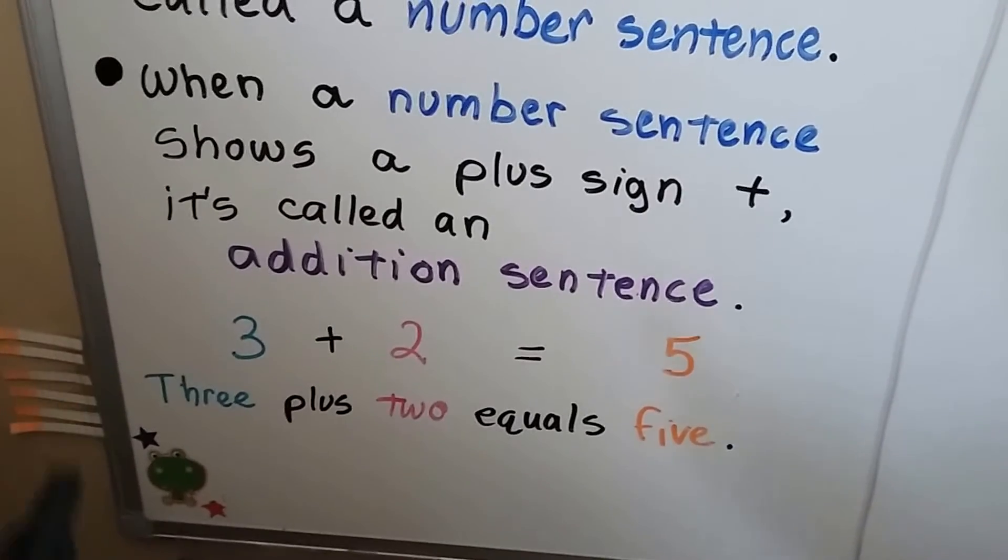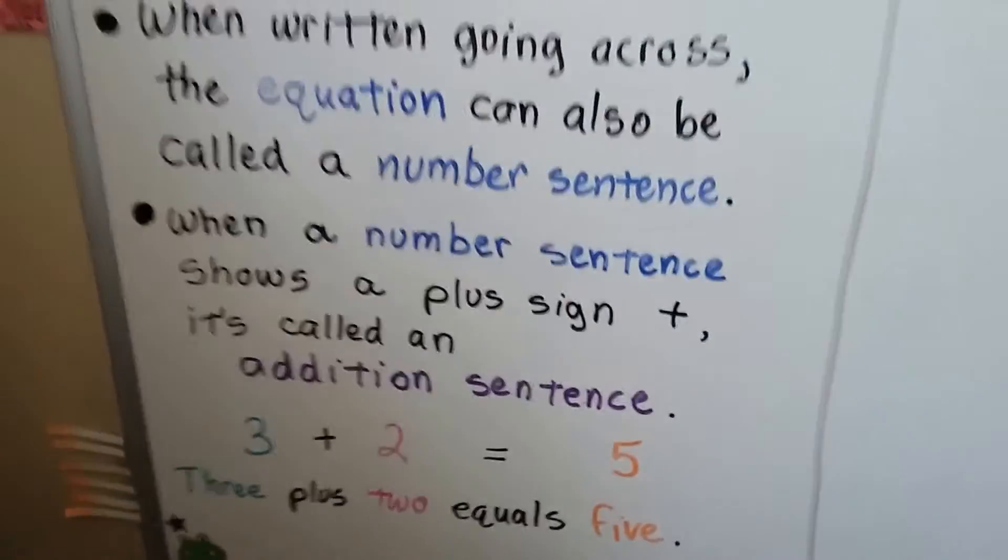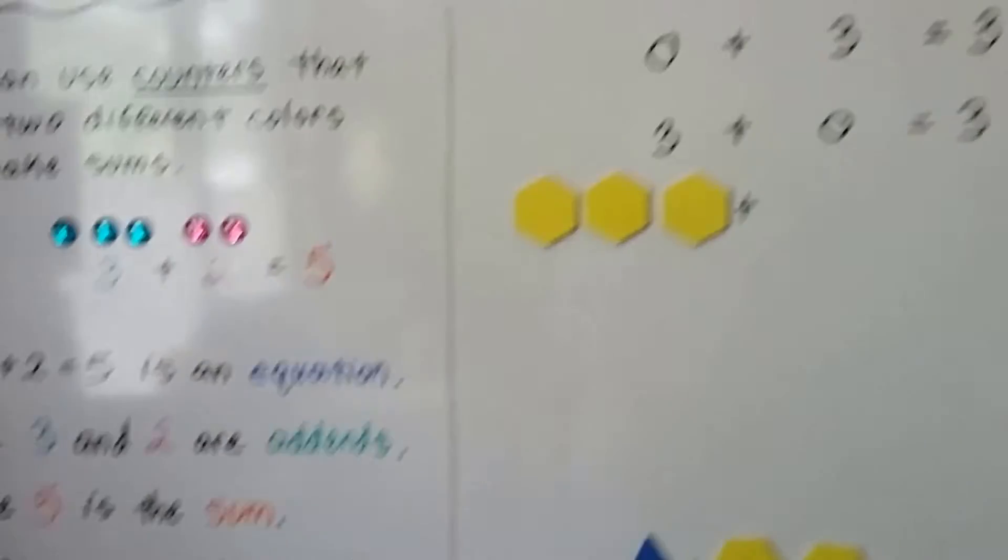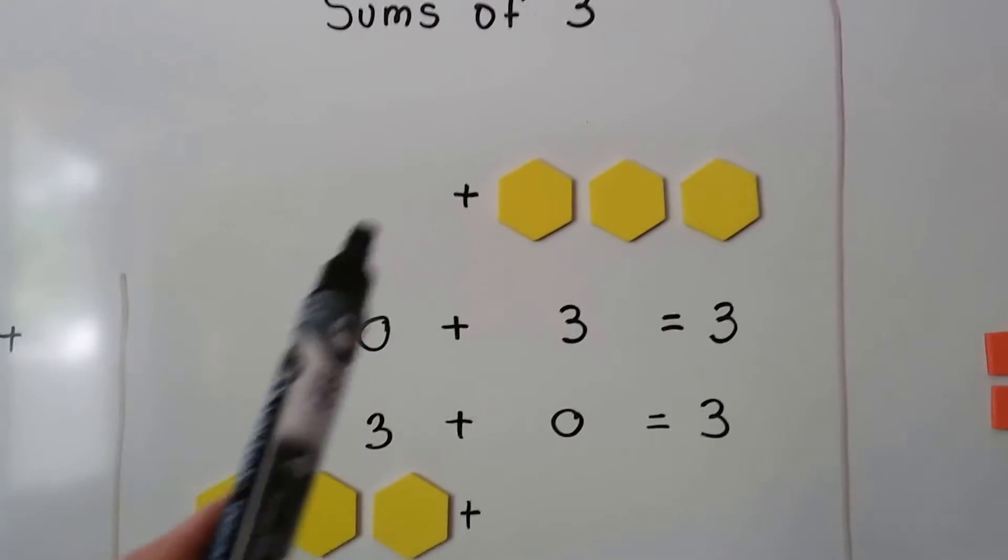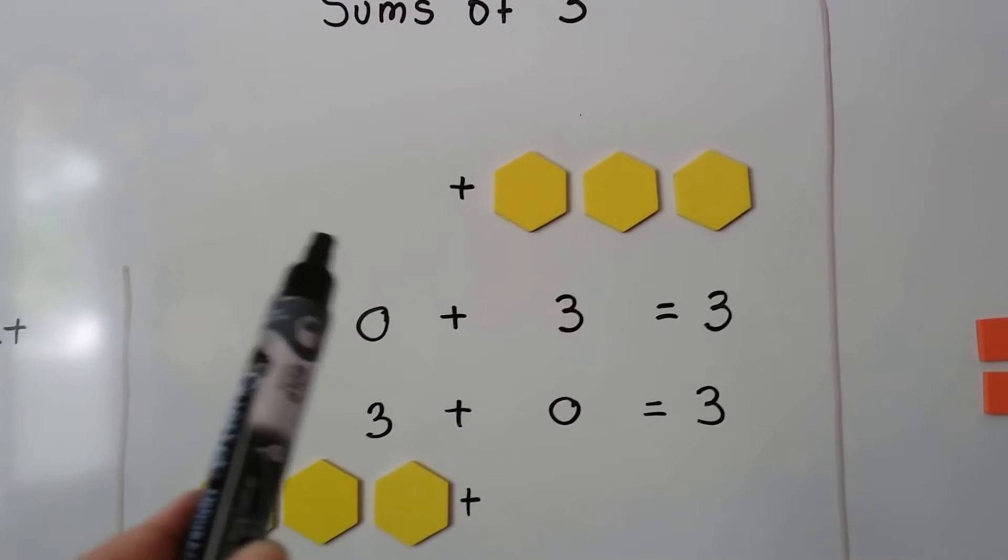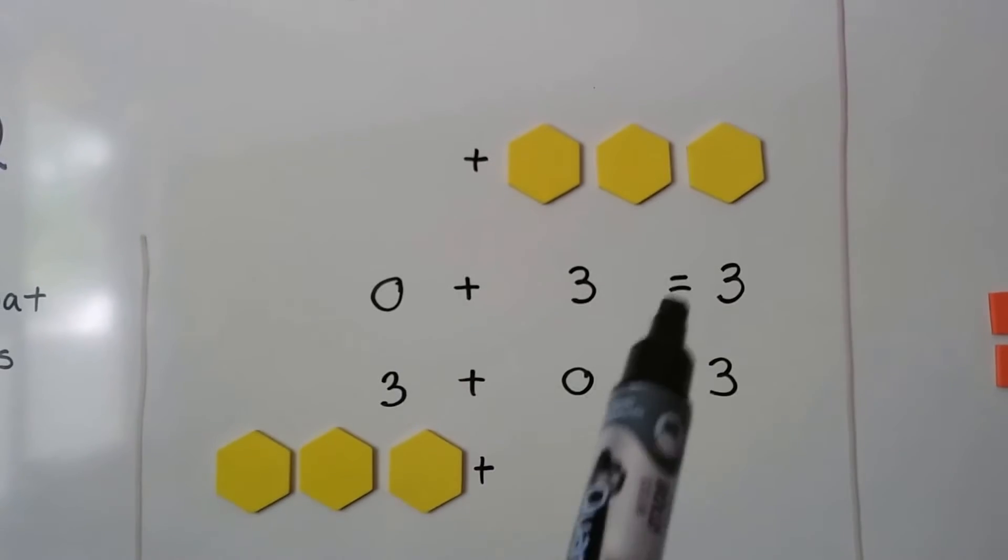This is three plus two equals five. So we're going to do number combinations for sums of three. Here we don't have any counters, but we have three on this side. So we have zero plus three. It equals three.